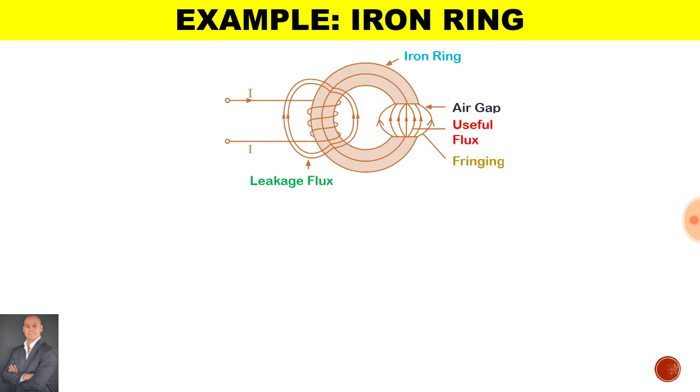Here is an illustration of an iron ring. We have the leakage flux which does not pass through the circuit. We have the fringing flux which leaks outside of the sides of the air gap, and we have the useful flux which passes through the circuit.